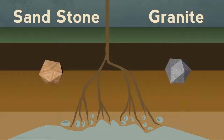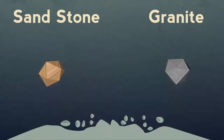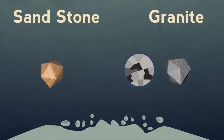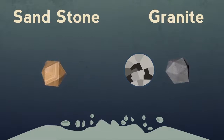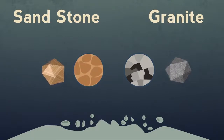They are made up of grains. The granite has interlocking grains like this, but sandstone has rounded grains like this.